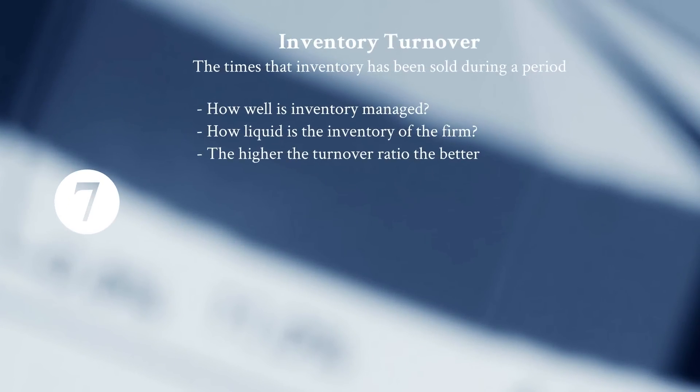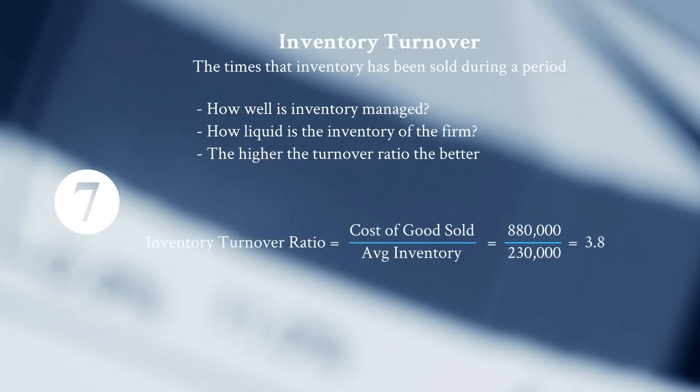Number seven on our list is Inventory Turnover — a key figure for manufacturers and retail businesses. It's the number of times inventory gets sold during a period. We want to see how well inventory is managed: is it sitting on shelves too long, or is it turning over quickly and converting into cash? The higher the turnover ratio, the better.